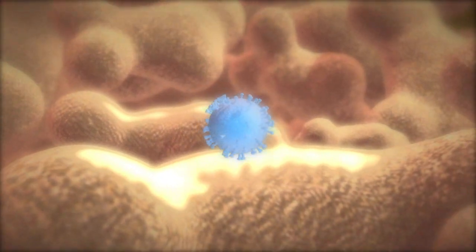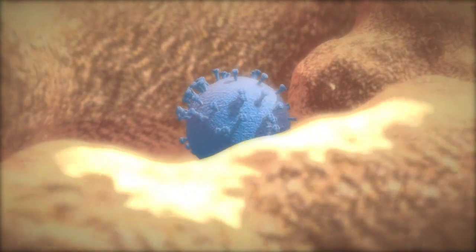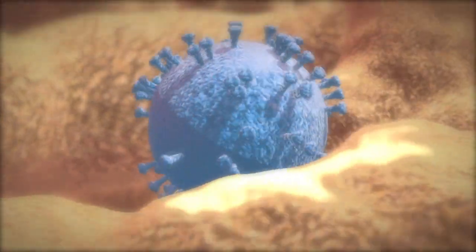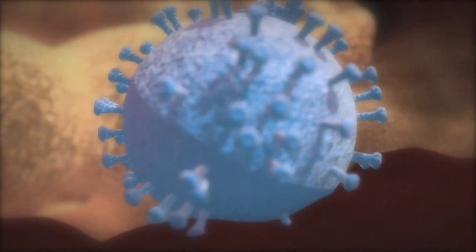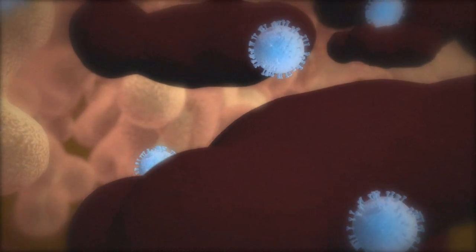The Human Immunodeficiency Virus, HIV, attacks the body's immune system and weakens its defenses against infections and certain types of cancer. In its most advanced stage, which can take between 2 and 15 years to develop, it's known as Acquired Immunodeficiency Syndrome, or AIDS.